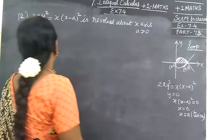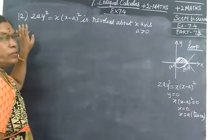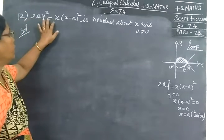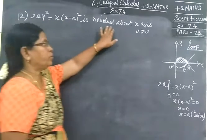Now we see part 73. That's the 12th question. 2y² = x(x-4)² is revolved about x-axis.